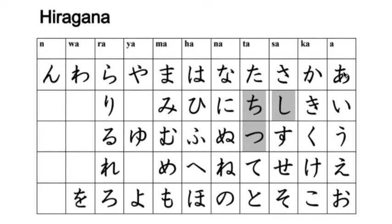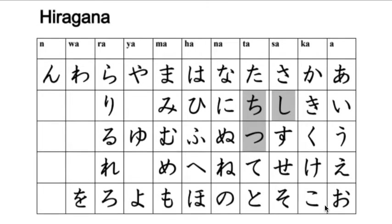The ka column of hiragana — ka, ki, ku, ke, ko — these five can take the ten-ten accents.